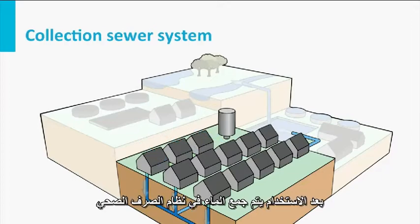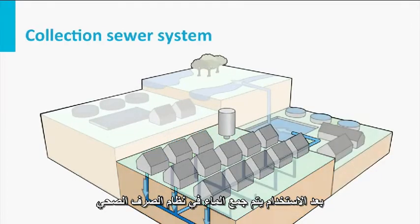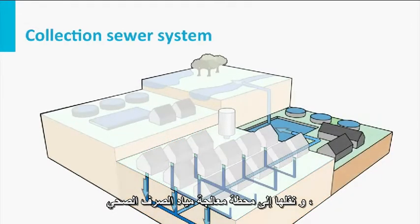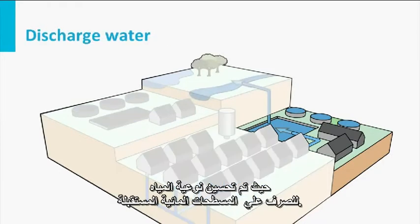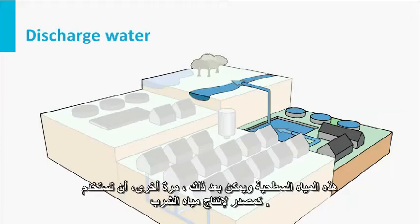After usage, the water is collected in a sewer system and transported to a wastewater treatment plant, where the water quality is improved for discharge into the receiving water bodies as a source for drinking water production.